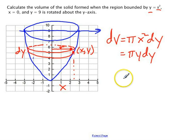What are our limits going to be? How many disks are we adding up? Well, we're starting at the bottom here, and we're stacking them one on top of the other, and we're going to stop when we get up to 9. So our actual volume of the solid is going to be pi times the integral from 0 to 9.